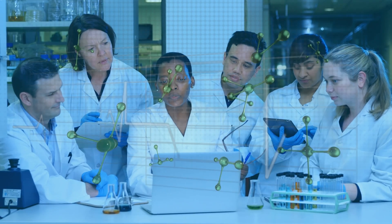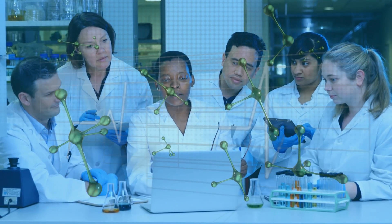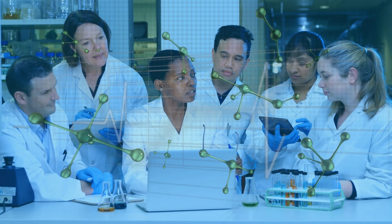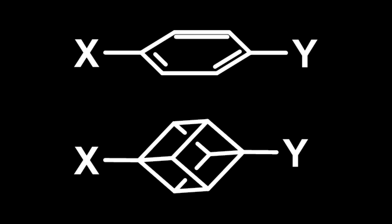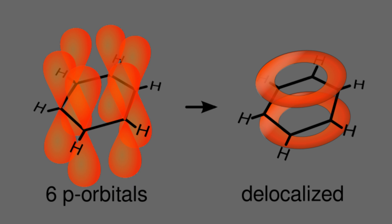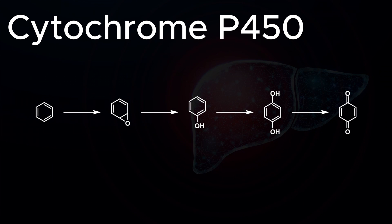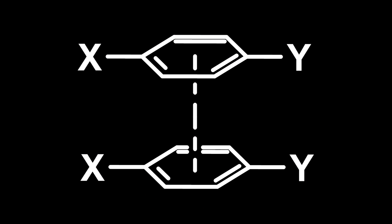Bioisosteres are commonly used by medicinal chemists to replace functional groups that can cause issues in drug development programs. While benzene is the most common aromatic ring used in drug design, its use can cause a few key problems. Benzene contains electron-rich SP2 bonds, which can be oxidized by cytochrome P450 enzymes in the body. This generates reactive species which can react with various nucleophilic groups in the body, leading to toxicity. Benzene's flat structure and ability to form pi-stacking interactions can also lead to poor solubility, which is not ideal for a drug candidate.